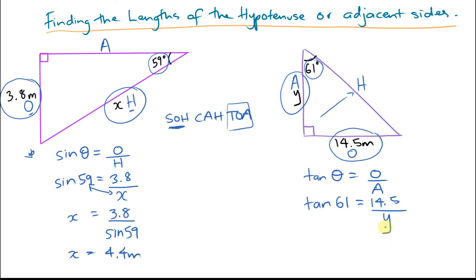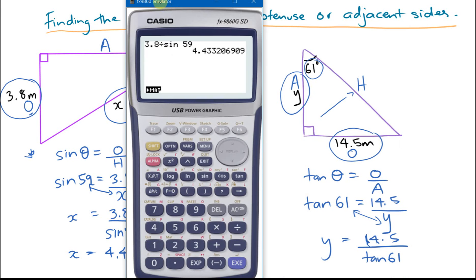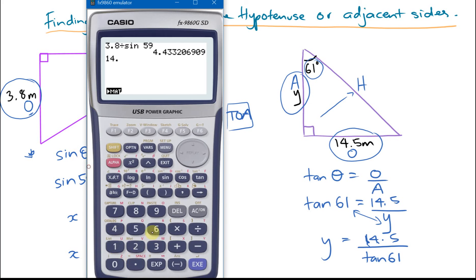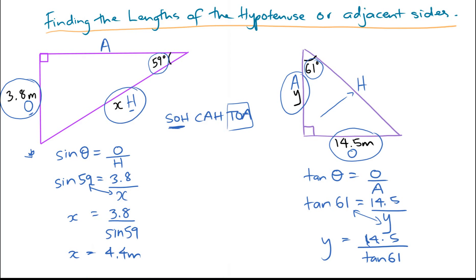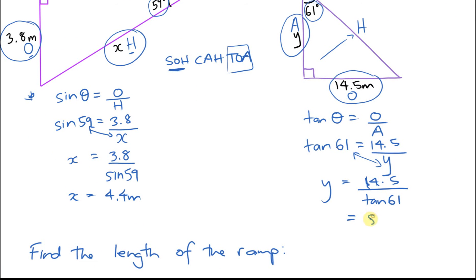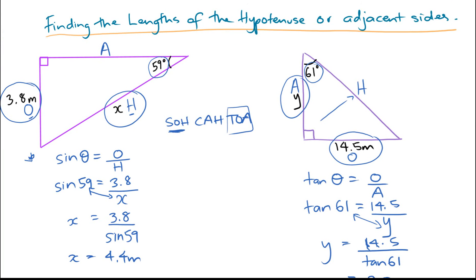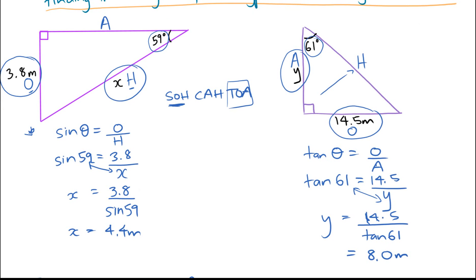The opposite side is 14.5 meters divided by the adjacent side, which is Y. Our unknown side length is in the denominator, so we need to swap these two. Y is therefore equal to 14.5 divided by tan 61, which equals 8.0. So Y is equal to 8.0 meters. So that's finding the hypotenuse or adjacent sides just given a basic triangle.